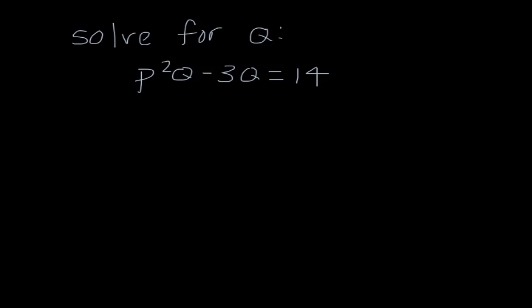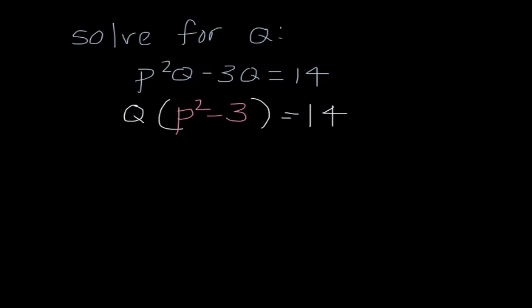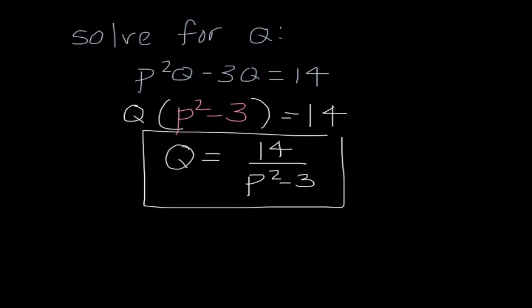Here's the tricky isolating problem that some of you asked about from Quiz 1.3. It says solve for Q, and we have P squared Q and 3Q — two different Q terms that cannot be combined because they're not like terms. The answer is to factor out the GCF, which is Q. Taking Q out of P squared Q leaves P squared; taking Q out of negative 3Q leaves negative 3. So we have Q times the quantity P squared minus 3 equals 14. Divide both sides to get Q equals 14 over P squared minus 3.